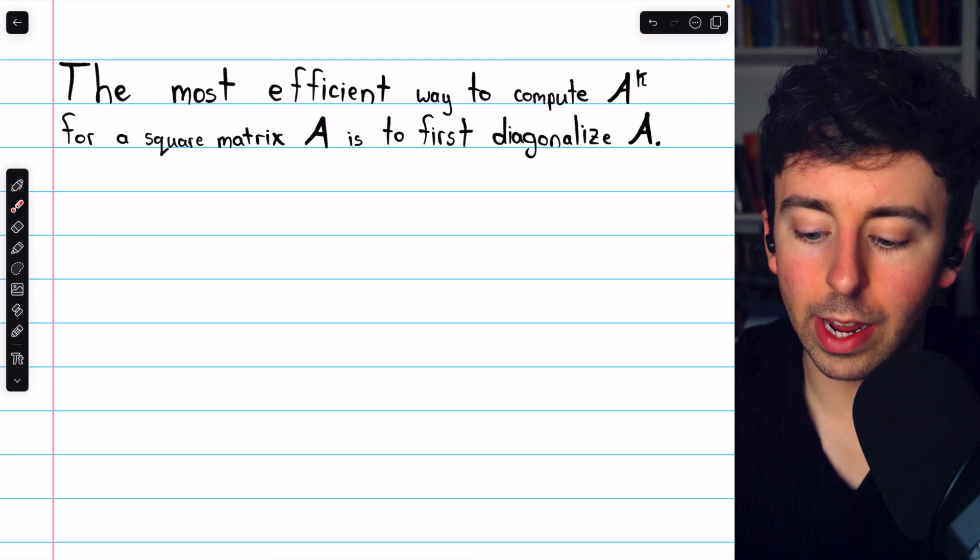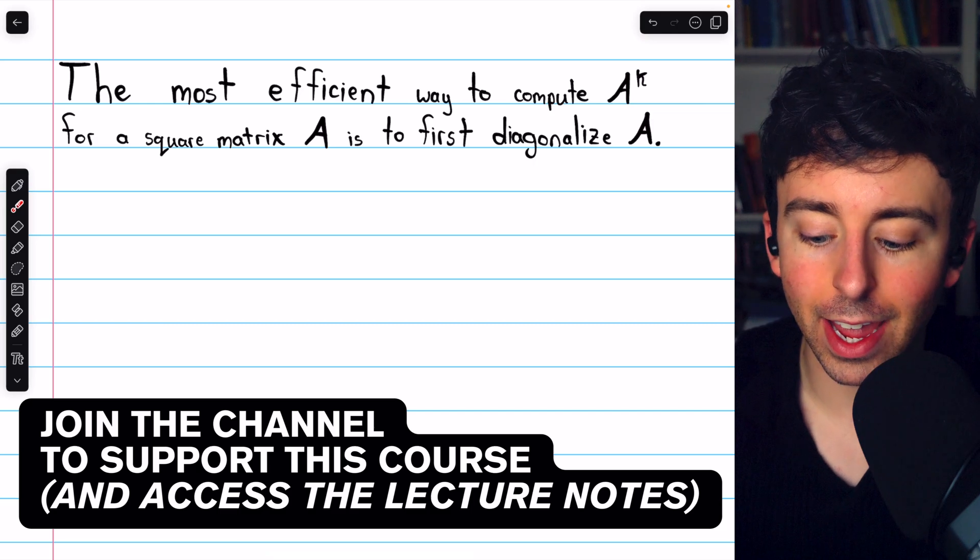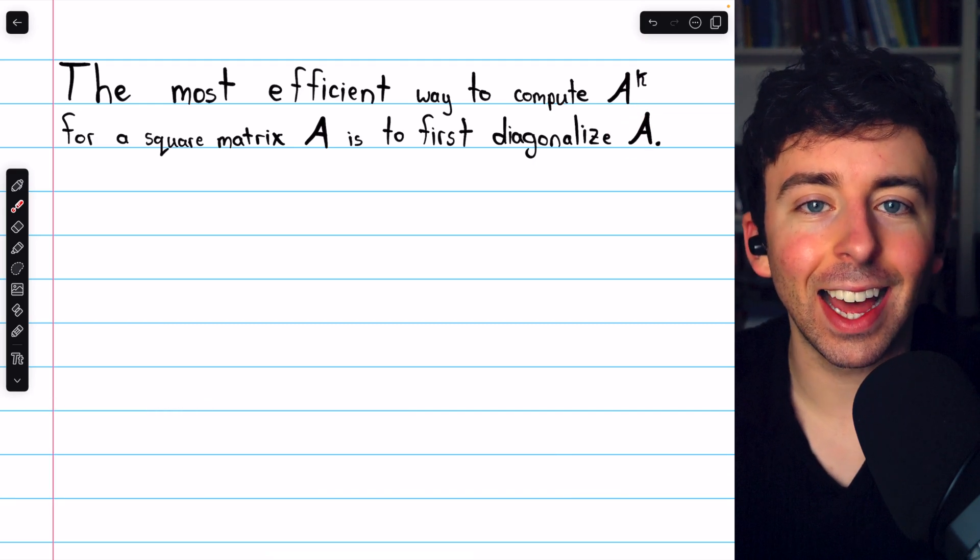Generally, the most efficient way to compute A to the power of k for a square matrix A is to first diagonalize A.